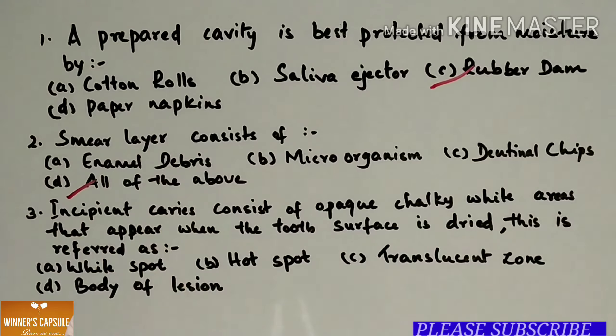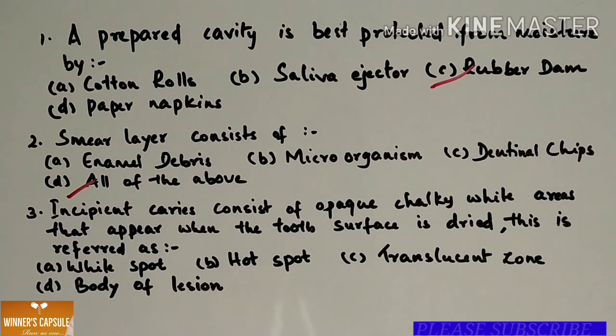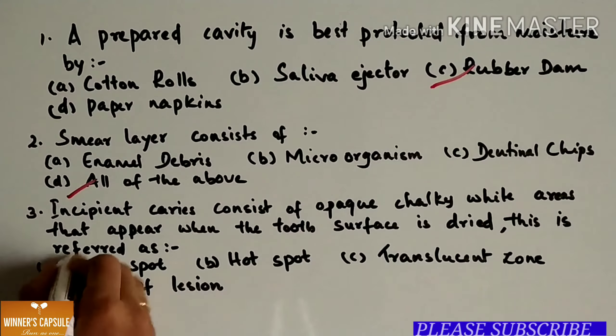Third one: Incipient caries consists of opaque chalky white areas that appear when the tooth surface is dried. This is referred as (a) White spot (b) Hot spot (c) Translucent zone (d) Body of lesion. Answer is option A, white spot.